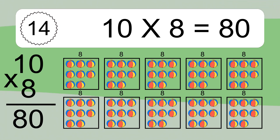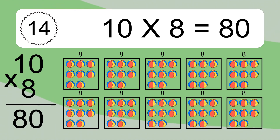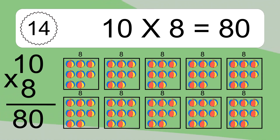We have 10 boxes, and each box has 8 colorful balls inside. If you count all the balls in all the boxes together, you will have 10 times 8 balls. This equals 80 balls.